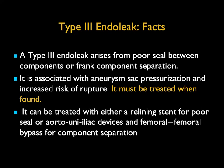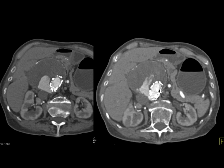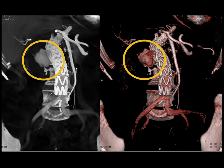Type 3 endoleaks are uncommon — they arise from poor seal between the components or frank separation. Associated with aneurysmal sac pressurization and increased risk of rupture. When found, they must be treated either with a relining stent, an aorto-uni-iliac device, or fem-fem bypass. Here's a good example: on non-contrast CT you see the aneurysm and the stent, and then on the arterial phase you see very active extravasation coming right through the stent material — nicely shown on the coronal and on the volume rendering, both gray-and-white and color-coded, showing the leak going right through the mesh.